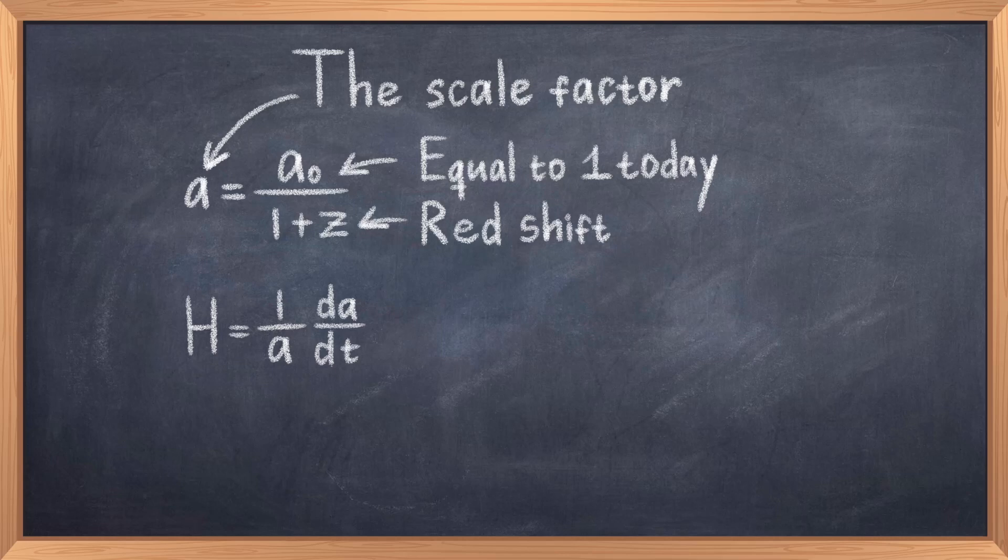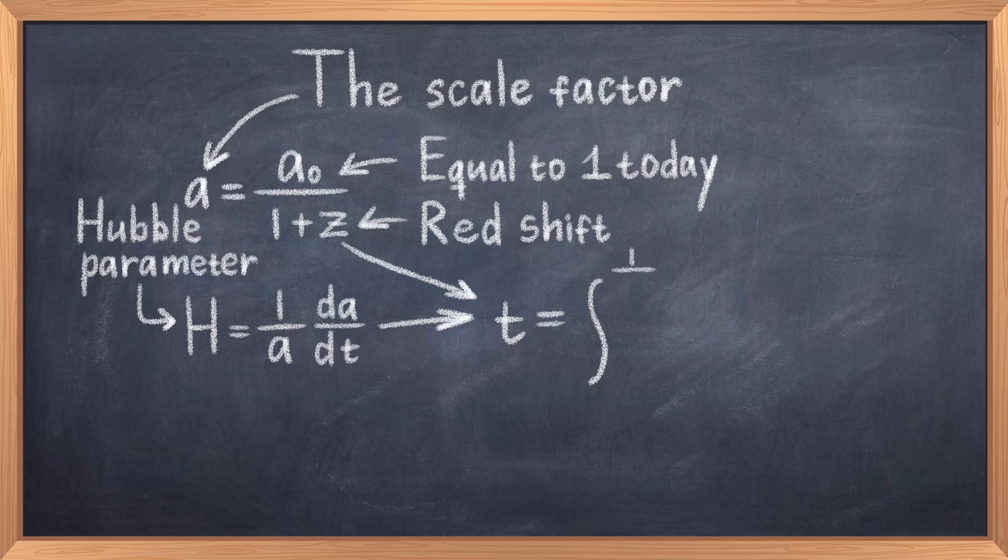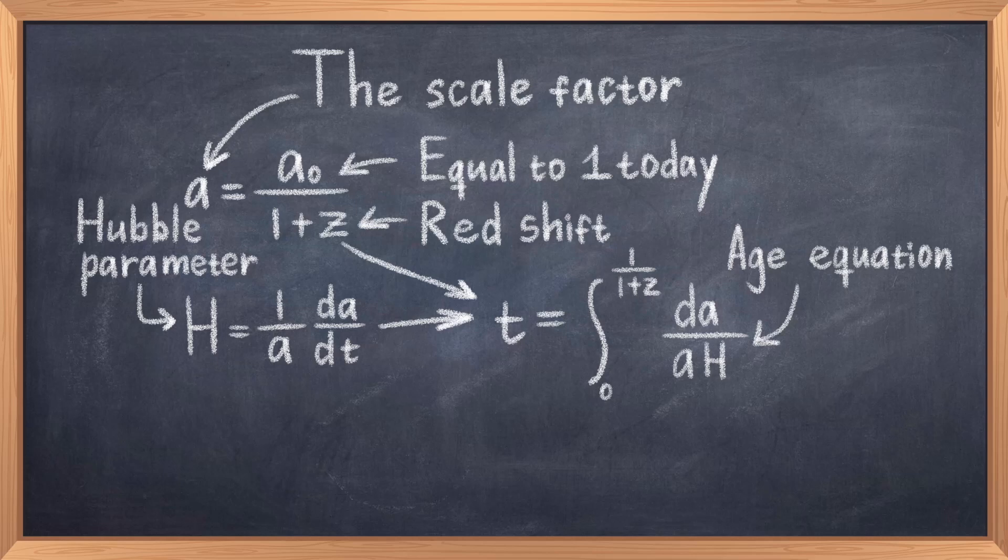This is a physical parameter indicating how much light has redshifted from traveling through space, and the relation to the scale factor is: A equals A₀ divided by 1 plus z, where A₀ today equals 1. Using the definition of the Hubble parameter in terms of the scale factor, H equals 1 over A times dA over dt, one can relate all of this with time. This allows us to obtain an equation for calculating the age of some cosmic event.